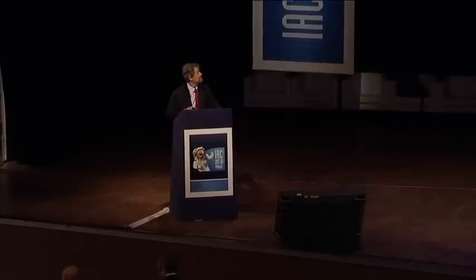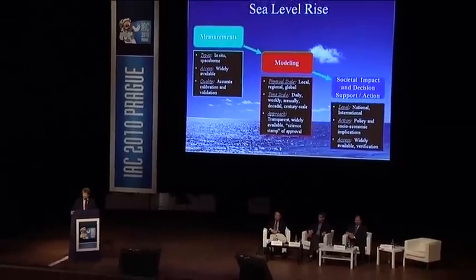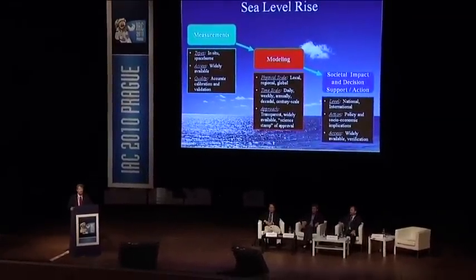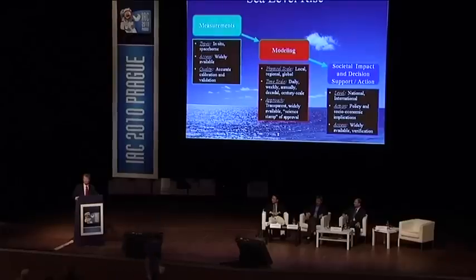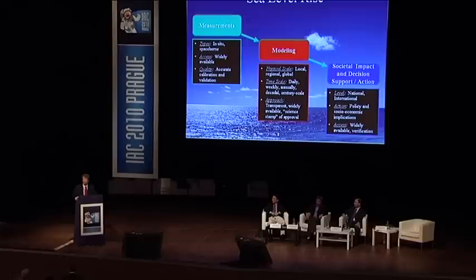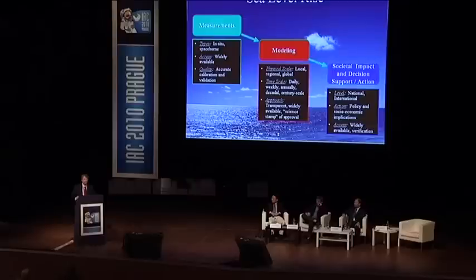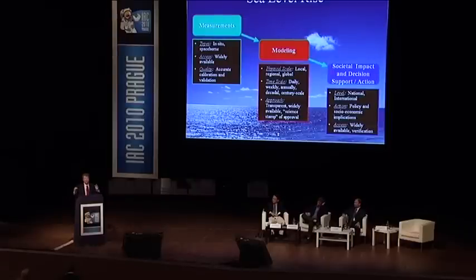Today our topic is sea level rise and the societal impacts. We've tried to break it up into three different categories: first, the measurements themselves — how we acquire them both in situ and from space, and how we calibrate them; second, modeling — how we take that information and the physics we understand today to project where sea level rise will be 20, 50, 100 years from now; and third, the societal impacts. We've condensed it to give you a snapshot of what is transpiring today in oceanography.